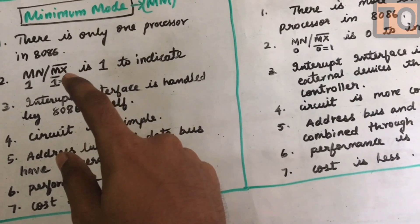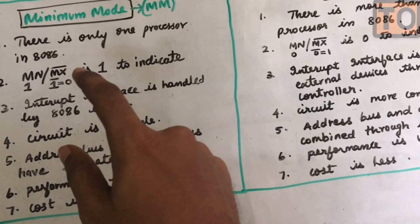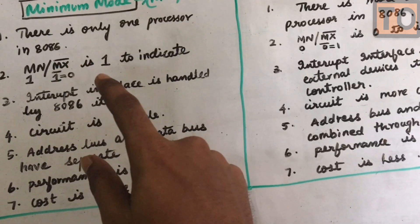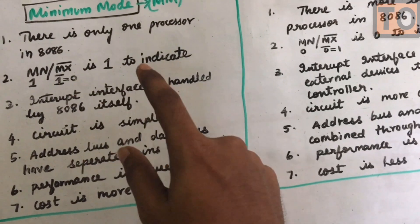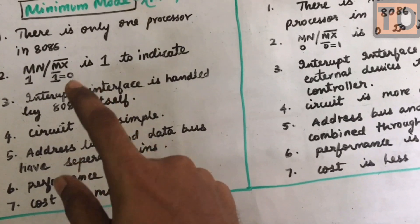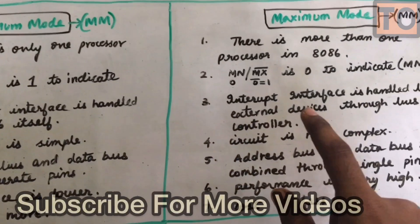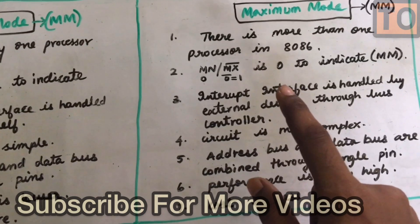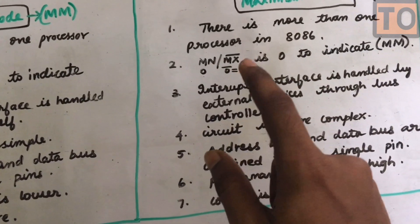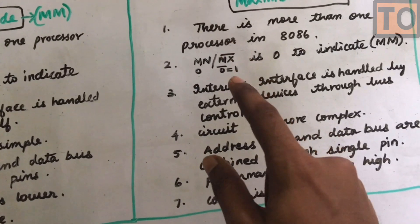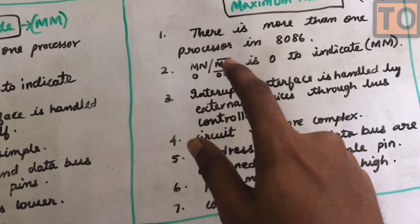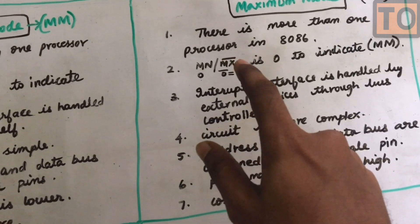If you have the maximum mode, then it will be active and the value will be 0. The MX bar pin is 0 for maximum mode and 1 for minimum mode. You can denote this as MX bar = 0 slash 1.